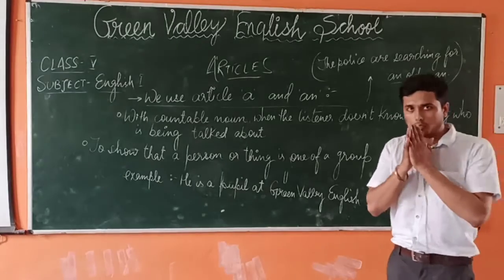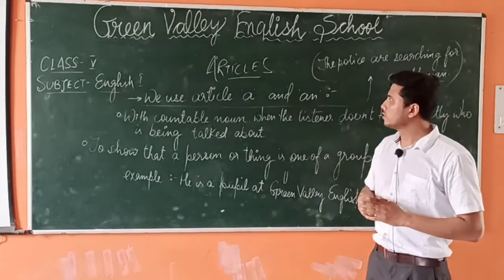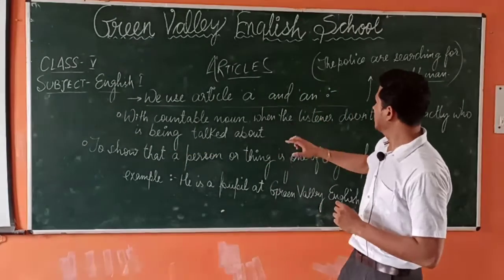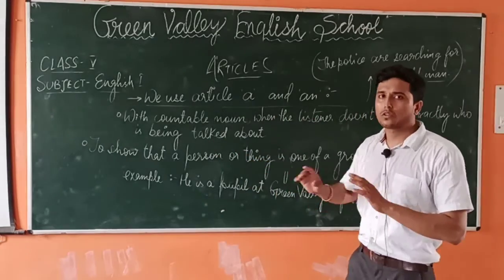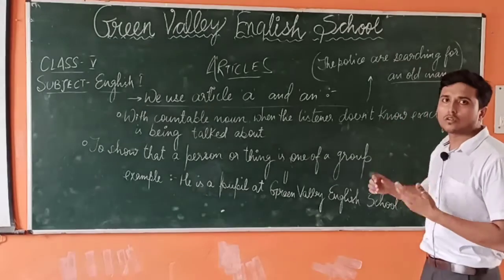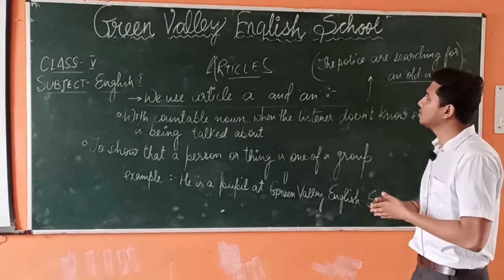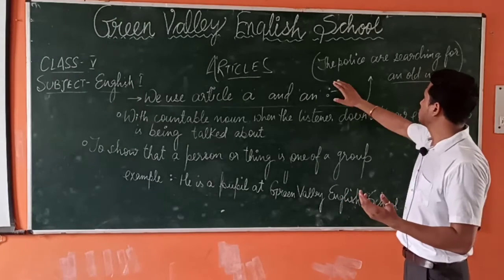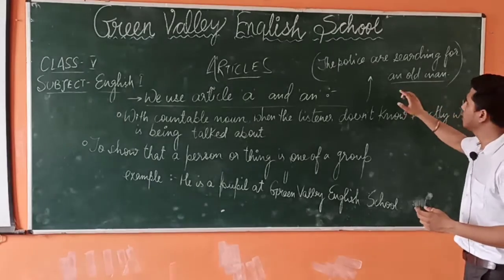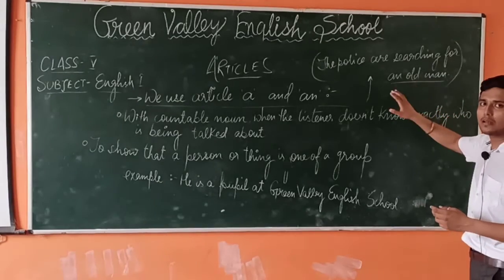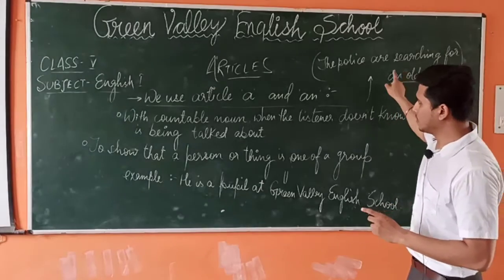So, as we were talking about the conditions for the usage of a and an — the first condition is: use a or an before a noun when the listener does not know exactly who is being talked about. When we do not know about the person we are talking about, we use a or an according to their sound. For example, 'The police are searching for an old man.' We have used 'an' because of the vowel sound coming from that letter.